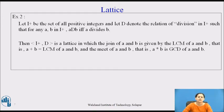Here is the second example. Now we consider this from the number system. Let I+ be the set of all positive integers, and let d denote the relation of division in I+, such that for any a, b in I+, we write the ordered pair adb. This is the notation that we use: a is related to b by the relation d, that is division.